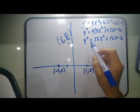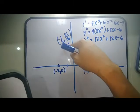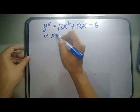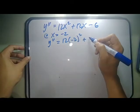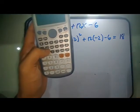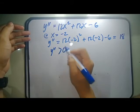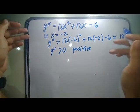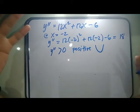After getting the second derivative, substitute the values of the critical points: negative 2, negative one-half, and 1. At x equals negative 2, y double prime equals 12 times negative 2 squared plus 12 times negative 2 minus 6, which equals 18.